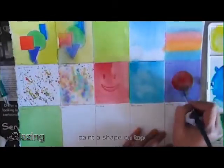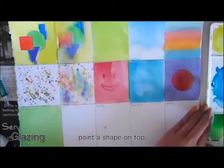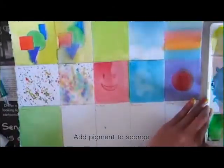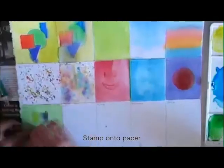In your glazing box, paint right over the dried wash using semi-transparent paint. Here I loaded my sponge on both ends with different pigments and just stamped onto the dried wash.